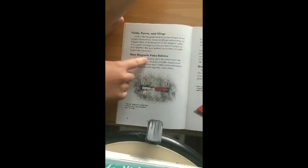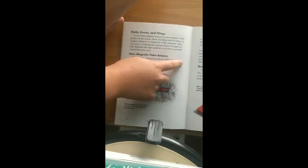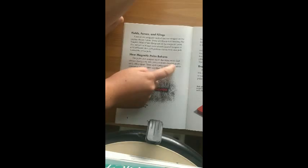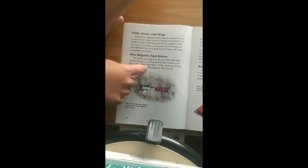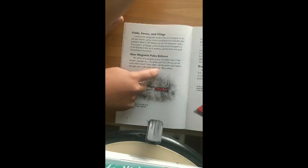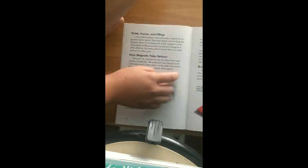The poles of a magnet act in the same ways that electric charges do. Like poles and like charges push each other apart. They repel. Unlike poles and unlike charges pull each other together. They attract.